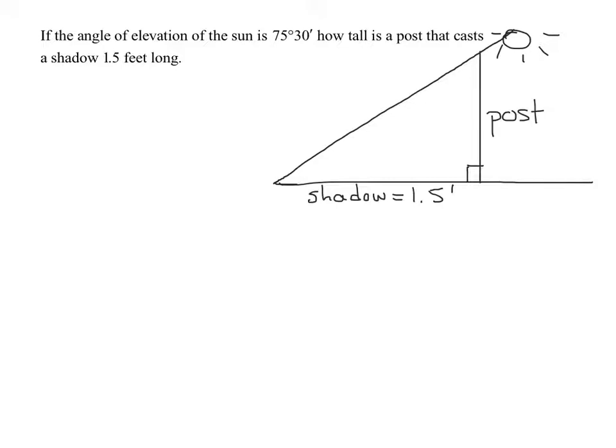We know the angle of elevation of the sun is 75 degrees 30 minutes. Remember, the angle of elevation is always measured from the horizontal, and it is how far I raise my eyes. My angle of elevation is in here - I start at the horizontal and it's how far I raise my eyes. So this angle here is 75 degrees 30 minutes. This is not an accurate sketch, just to give you an idea of what's going on.